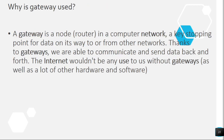Question 20: Why is a gateway used? A gateway is a node or router in a computer network — a key stopping point for data on its way to or from other networks. Thanks to gateways, we are able to communicate and send data back and forth. The internet wouldn't be of any use to us without gateways, as well as a lot of other hardware and software.